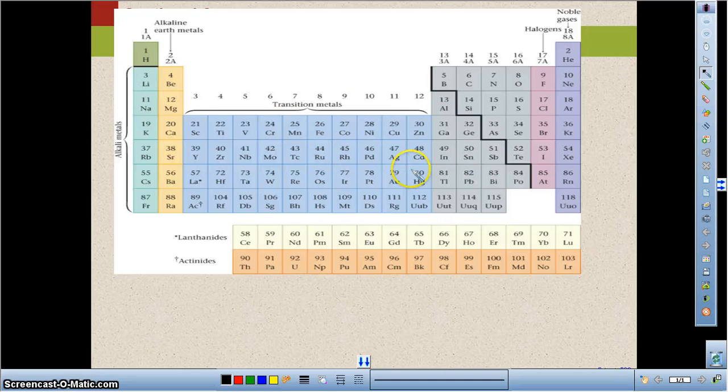All of these here underneath the stair step, so everything to the left of the stair step except for hydrogen, and these two last rows, the lanthanide and actinide series, those are all metals. Everything to the right of the stair step, these are all non-metals.